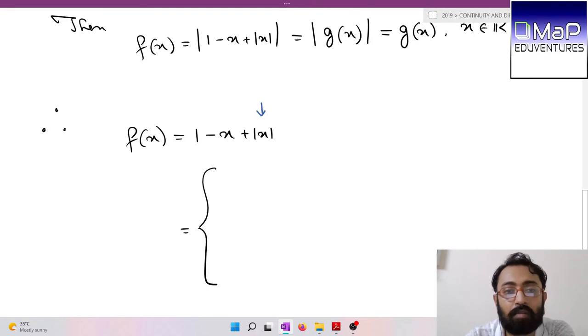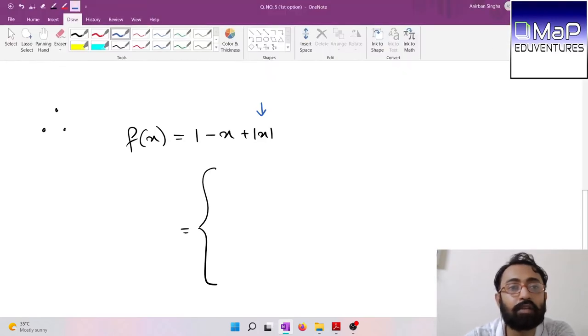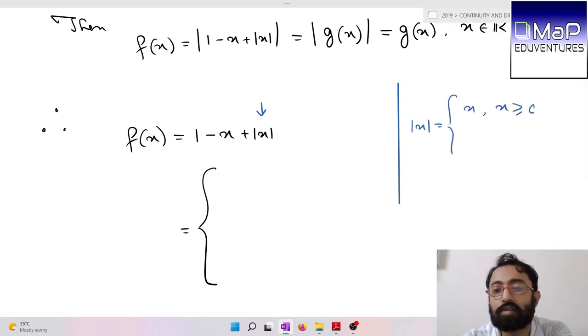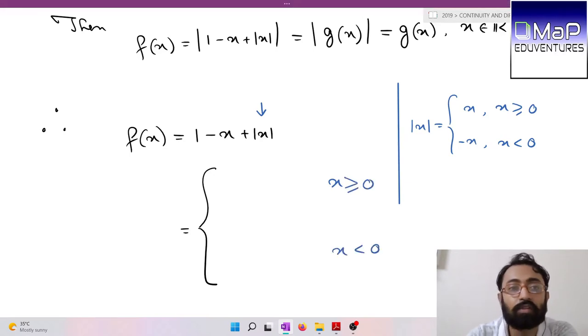We'll use the modulus definition. The modulus definition is: |x| equals x when x is greater than or equal to 0, and -x when x is less than 0.